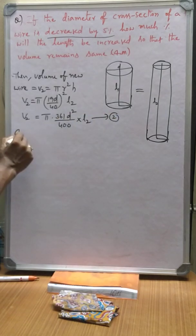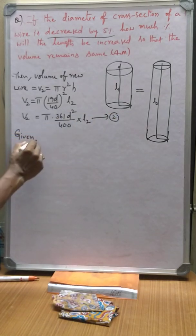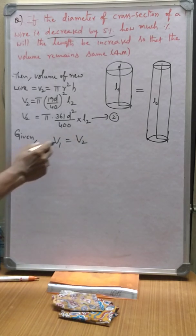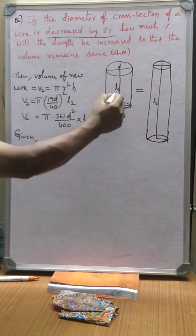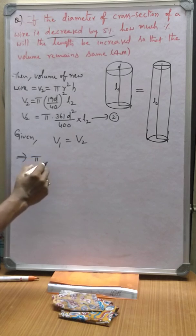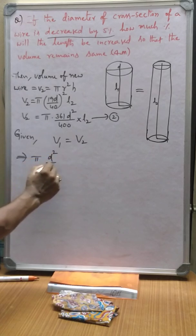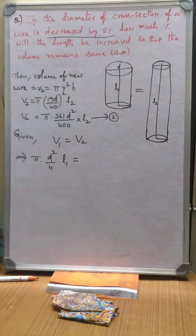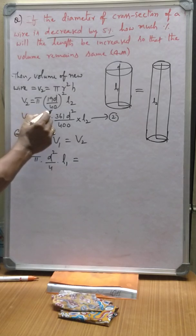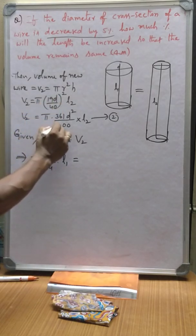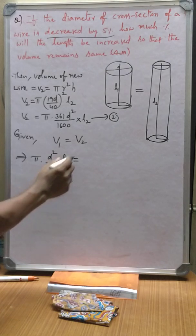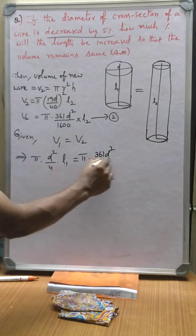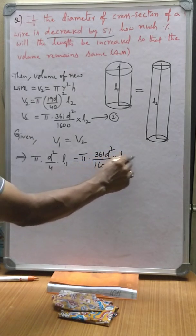Given the volumes are equal, volumes are equal is nothing but V1 is equal to V2. Volume of the first wire is π D² by 4 into L1. Here there is some correction, 40 square is nothing but 1600. Now volume 2 is equal to π, 361 D² by 1600 into L2.